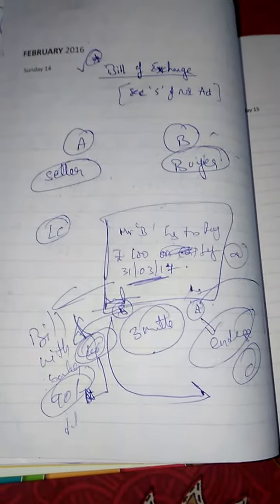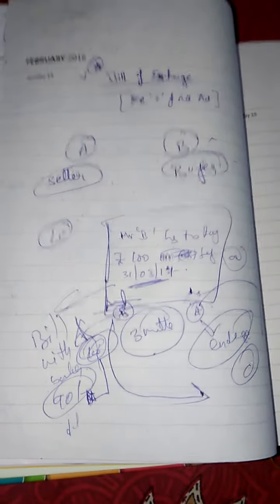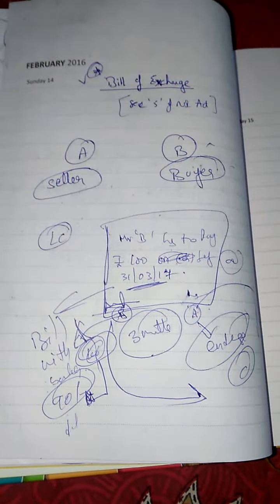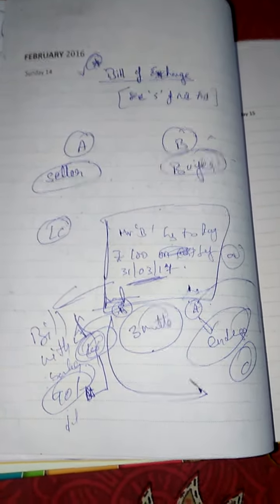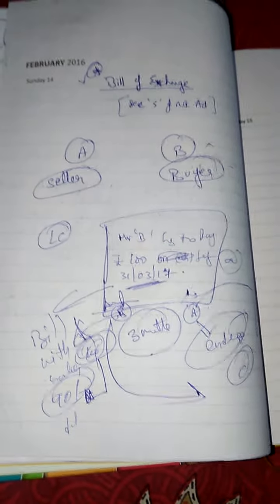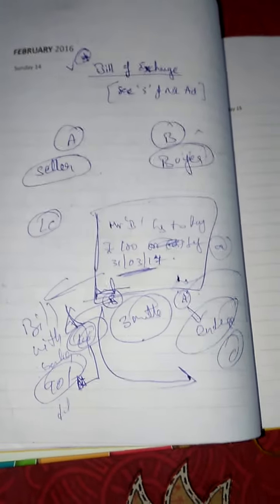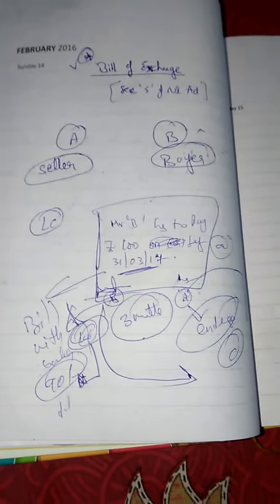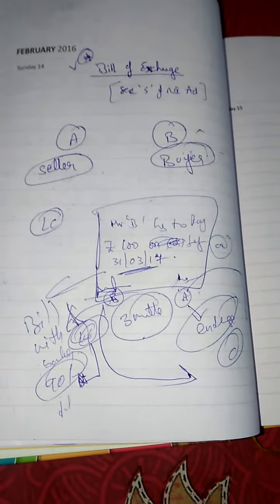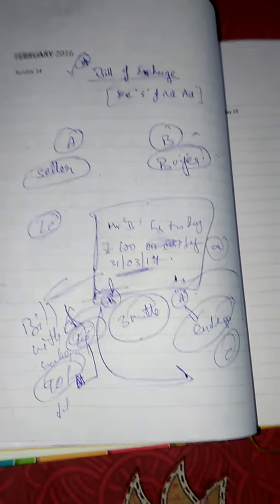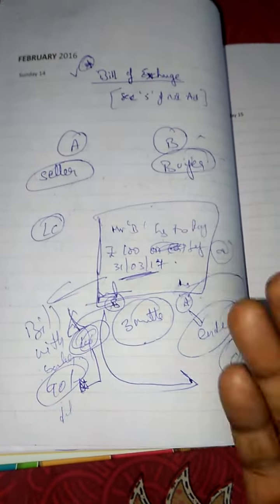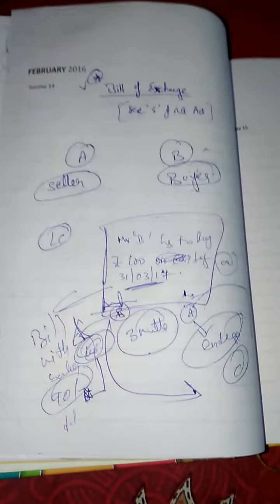So this bill made by the seller and duly accepted by the buyer is called a bill of exchange. Normally, a bill of exchange will be enclosed with the LC. One of the documents forming part of LC is the bill of exchange.